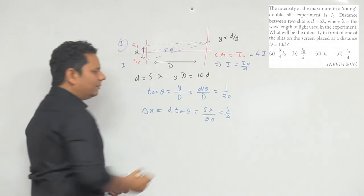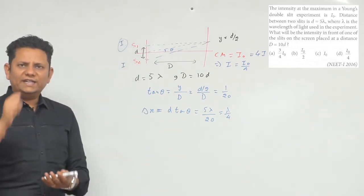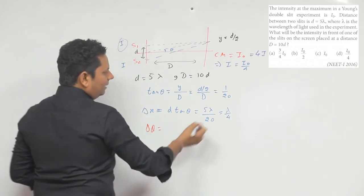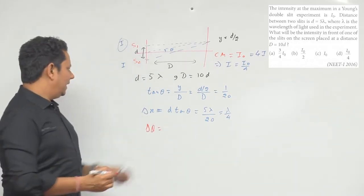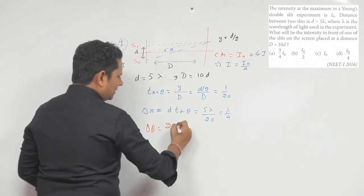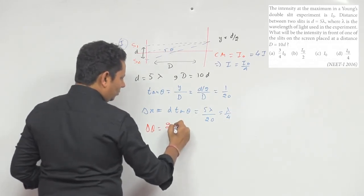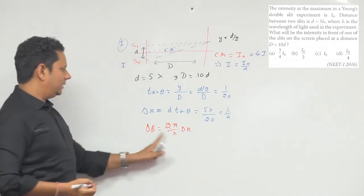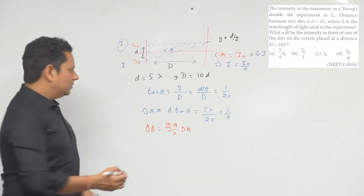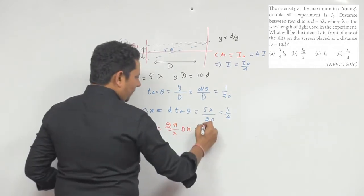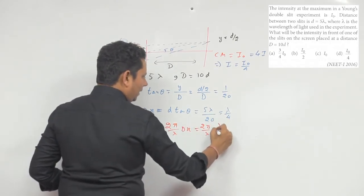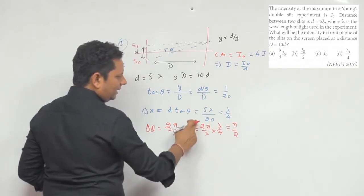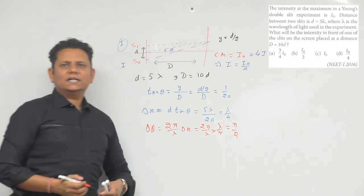अगर यह आपका path difference है, तो इसके लिए phase difference delta φ की value होएगी — path difference अगर delta x है, तो phase difference का formula है: delta φ = (2π/lambda) × delta x। तो delta φ = (2π/lambda) × (lambda/4) = π/2।